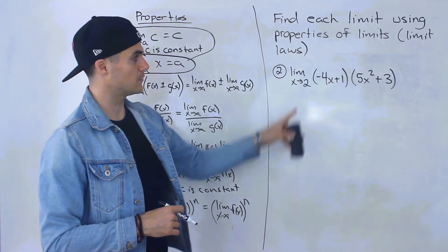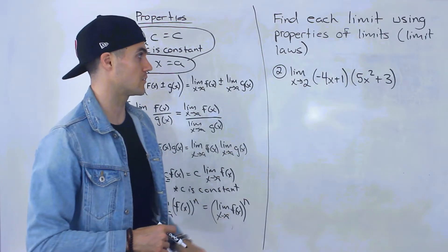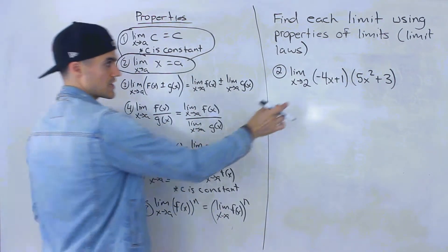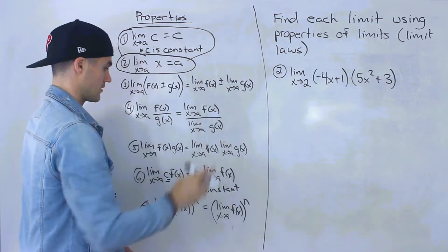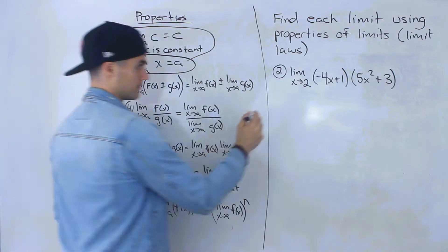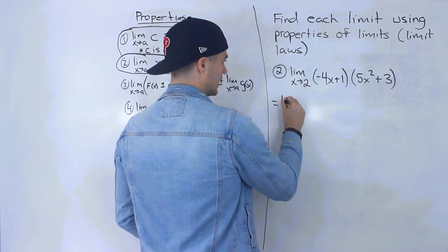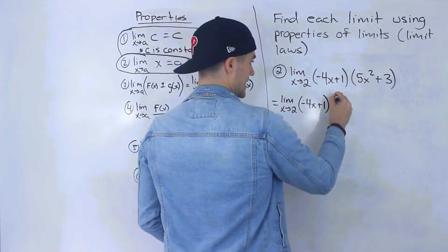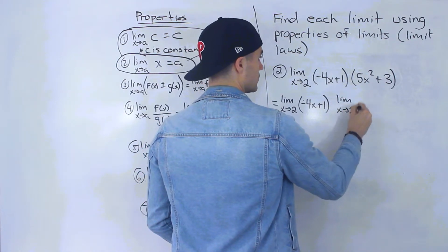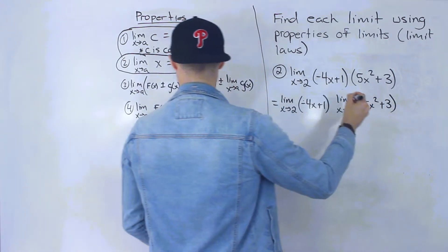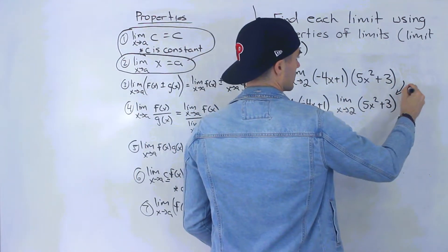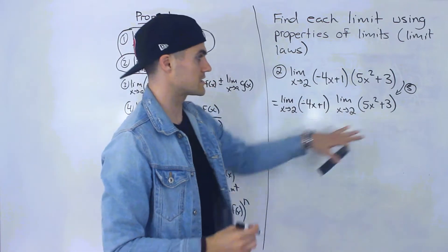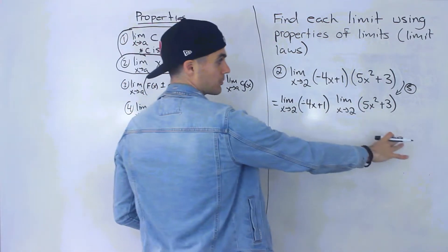Now moving on to number two — we got the limit as x approaches two of negative four x plus one, times five x squared plus three. Same thing, we're going to apply these laws and try to get in terms of format one and two. The first law: notice that we're multiplying two functions together. So we would use law number five first to split it up. We rewrite this as the limit as x approaches two of negative four x plus one, times the limit as x approaches two of five x squared plus three. That would be law number five.